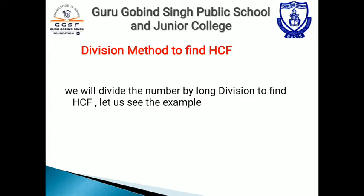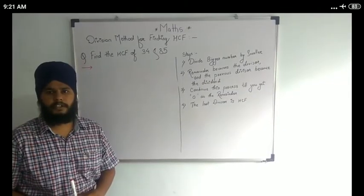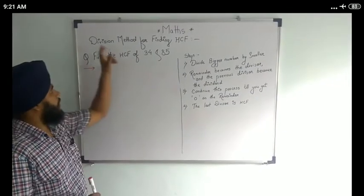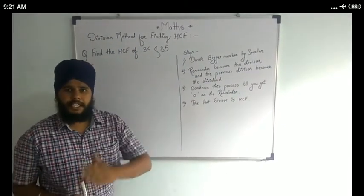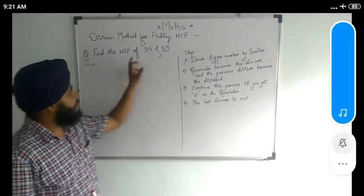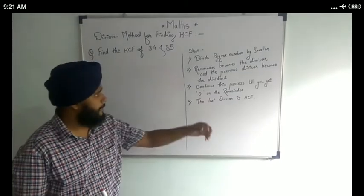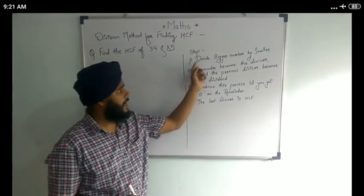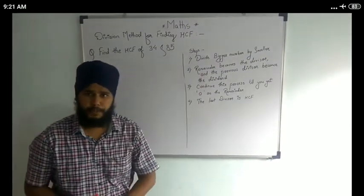Let us see the example. Division method for finding HCF: find the HCF of 34 and 85. Our first step is we are going to divide the bigger number by the smaller number.